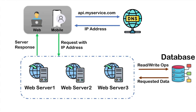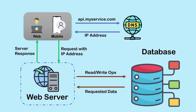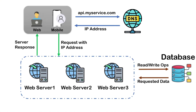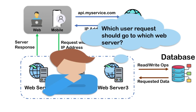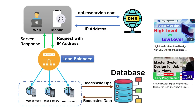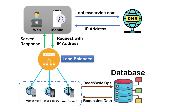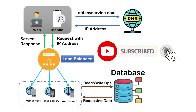But this introduces a new problem. In the earlier design we had only one web server which customers could connect to directly using its domain name. But now we have multiple web servers under a horizontally scalable system. So how will it be decided which user request goes to which server? We need a component that accepts all requests from customers and redirects them to one of the web servers for processing — that component is known as a load balancer. Customers connect to the public IP address of the load balancer directly, and the load balancer decides which web server the request is forwarded to. All internal communication should happen using private IP addresses, so customers should not be able to connect to web servers directly — they must go via the load balancer.